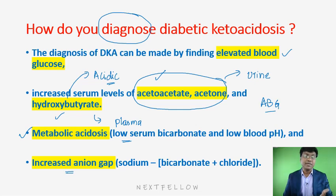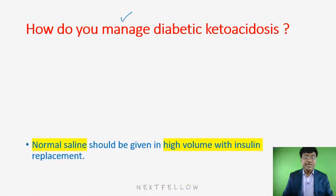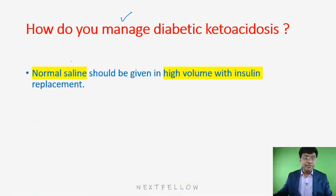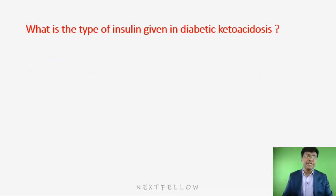Management of diabetic ketoacidosis: you need to give a high volume of normal saline first, followed by insulin. The type of insulin given is regular insulin — initially as an IV bolus, followed by insulin infusion.